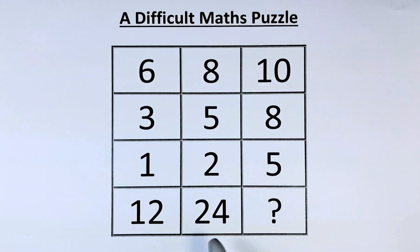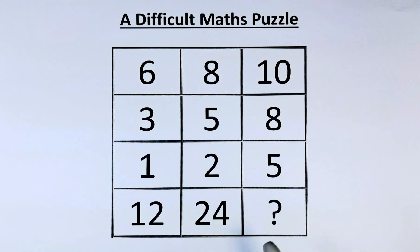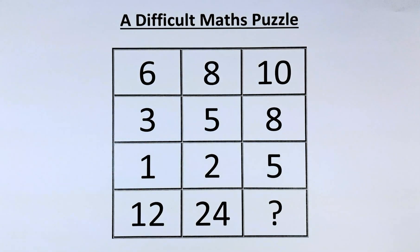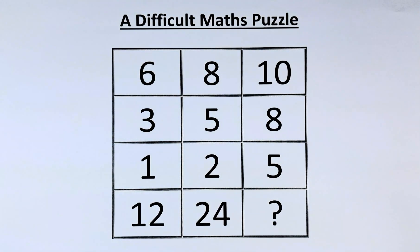And also at the bottom, 12, 24, and a question mark, they are also the biggest. So in other words, you can work either on a row or column. But without further ado, let's give you the solution.